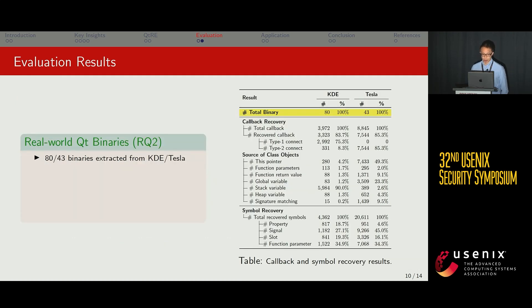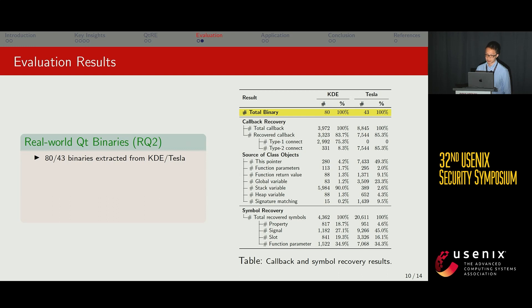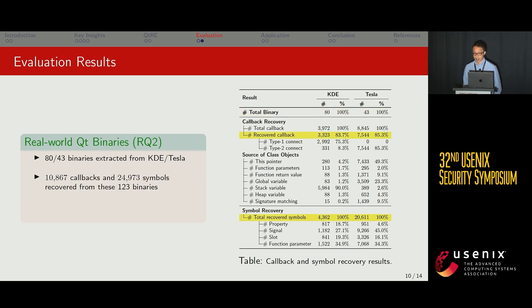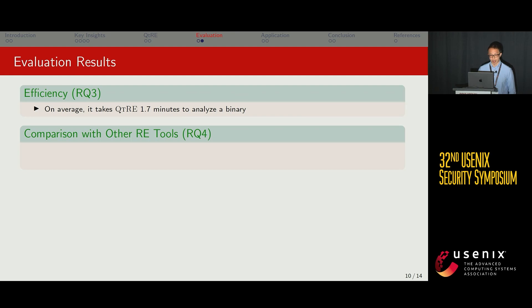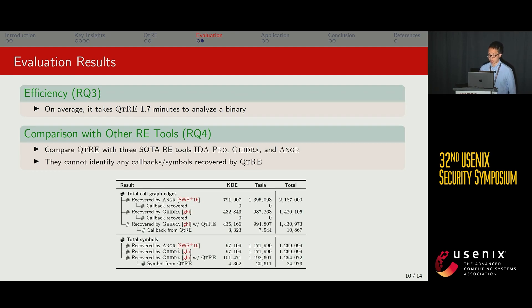We also answered how many symbols and callbacks QtIE identified from real-world Qt binaries. Using all 80 KDE and 43 Tesla binaries, QtIE successfully identified over 10,000 callbacks and nearly 25,000 symbols. In terms of efficiency, it takes QtIE around 1.7 minutes to analyze a binary. Compared with other state-of-the-art RE tools such as IDA Pro, Ghidorah, and Angr, none of them could identify any of the callbacks and symbols recovered by QtIE.